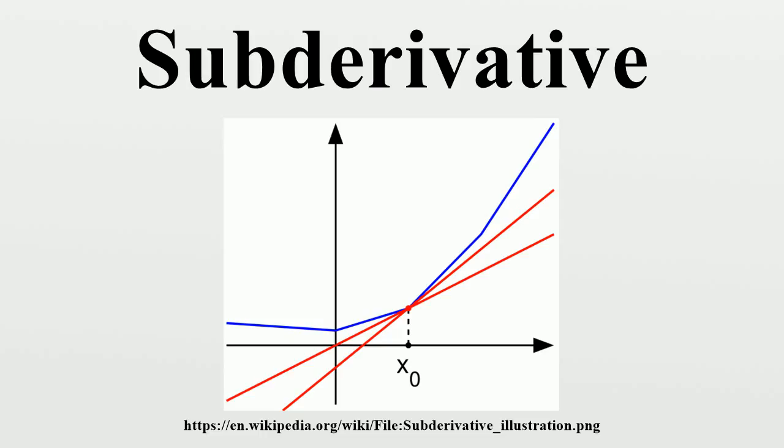However, as seen in the picture on the right, for any x₀ in the domain of the function one can draw a line which goes through the point and which is everywhere either touching or below the graph of F. The slope of such a line is called a sub-derivative.